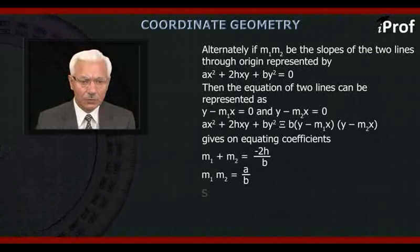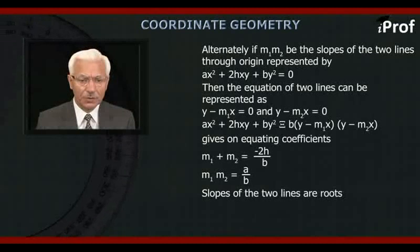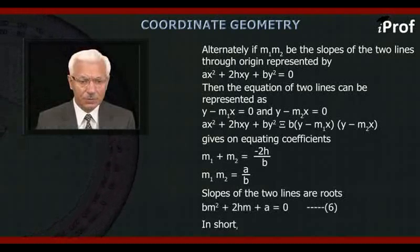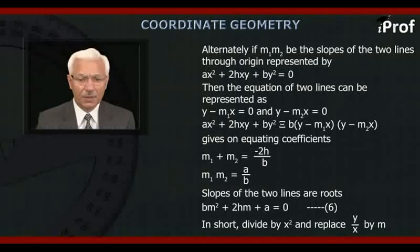Also, slopes of the two lines are the roots of the quadratic Bm² + 2Hm + A = 0. So in short, divide the equation by x² and replace y/x by m, we get the above quadratic.